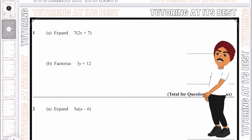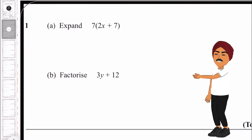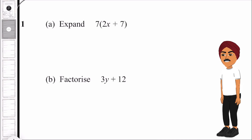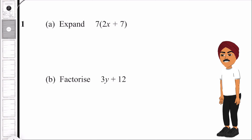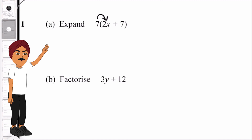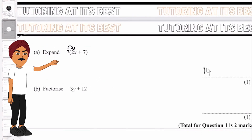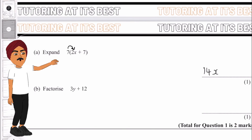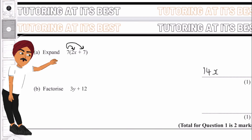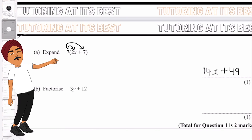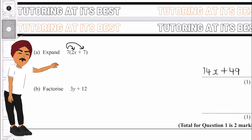Question number one: expand 7(2x + 7). We take the same method — multiply the number outside the bracket by all numbers inside. So we do 7 times 2x which gives us 14x, and then 7 times 7 which gives us 49. So the answer is 14x + 49.